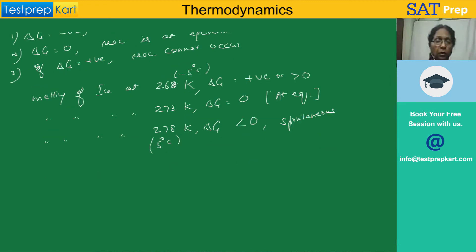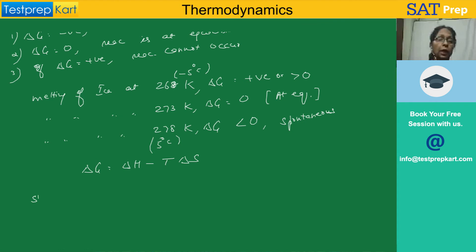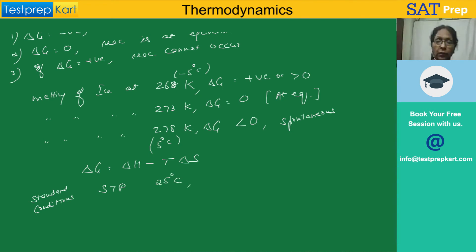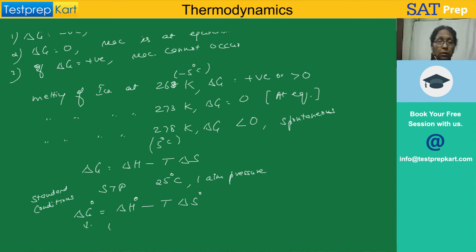This is a very important equation: delta G equals delta H minus T delta S. For a spontaneous reaction, delta G has to be negative. For this chapter, we use standard conditions — here that means 25°C (room temperature) and one atmosphere pressure. Under these standard conditions, we write delta G°, delta H°, and delta S° — the superscript 'not' (°) denotes standard conditions.